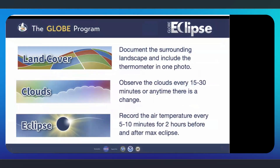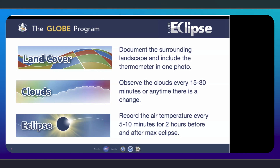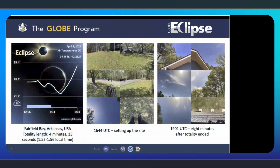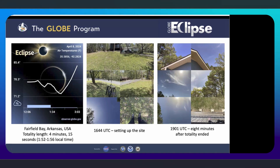What we asked people to do was collect data using the GLOBE Observer app. We had people use the land cover tool to document the landscape and include their thermometer in one photo, which sets the scene for the data collection. We also asked people to observe clouds every 15 to 30 minutes or any time they saw a change in the clouds. We also asked people to record the air temperature every 5 to 10 minutes for 2 hours before and after maximum eclipse. Shown here is an example of a data setup — a graph of air temperature on the left, cloud percentage at the bottom, and a Kestrel weather station with cloud observations.